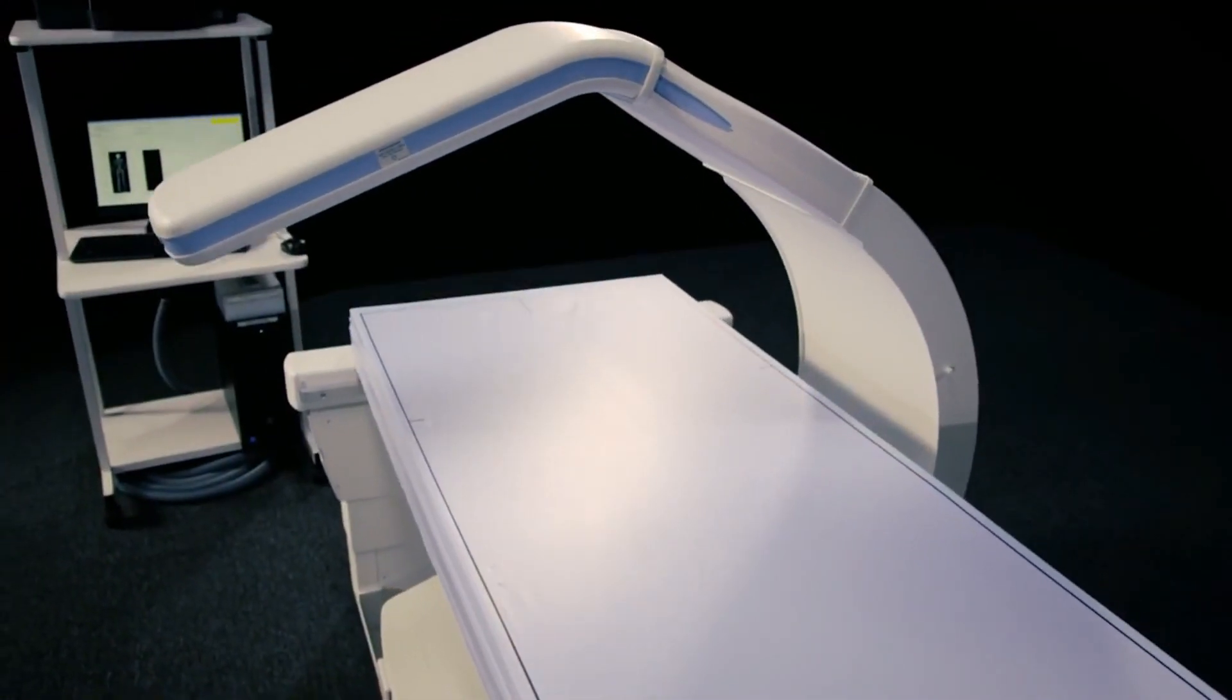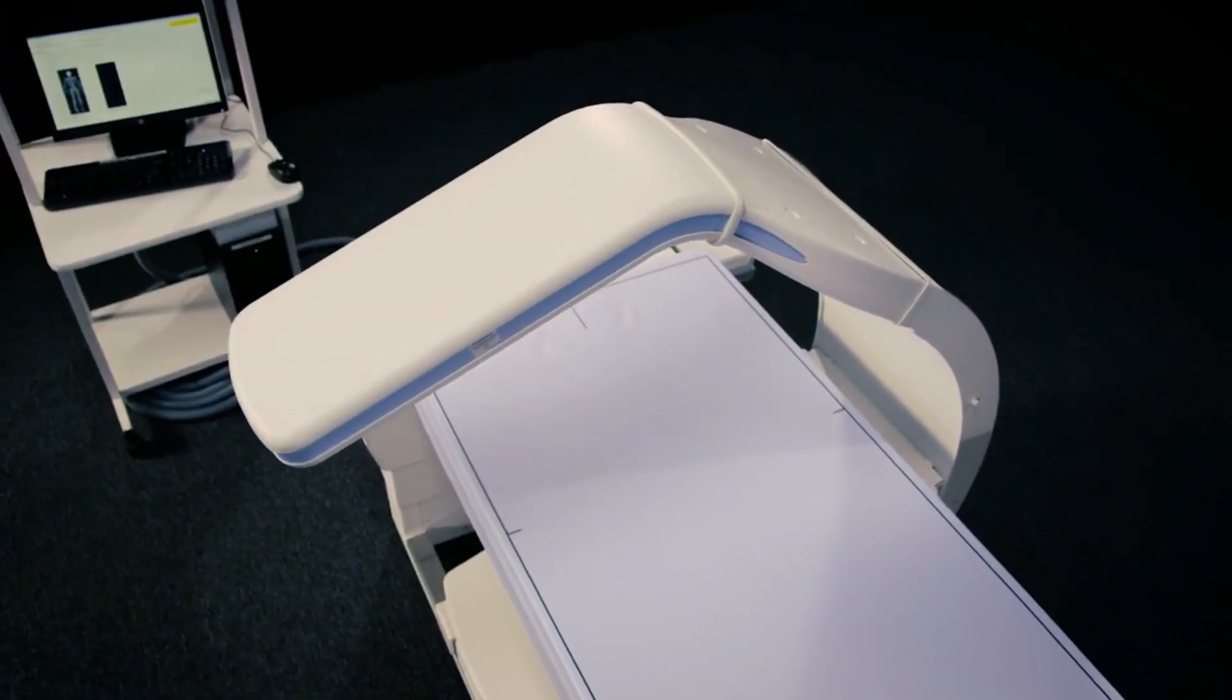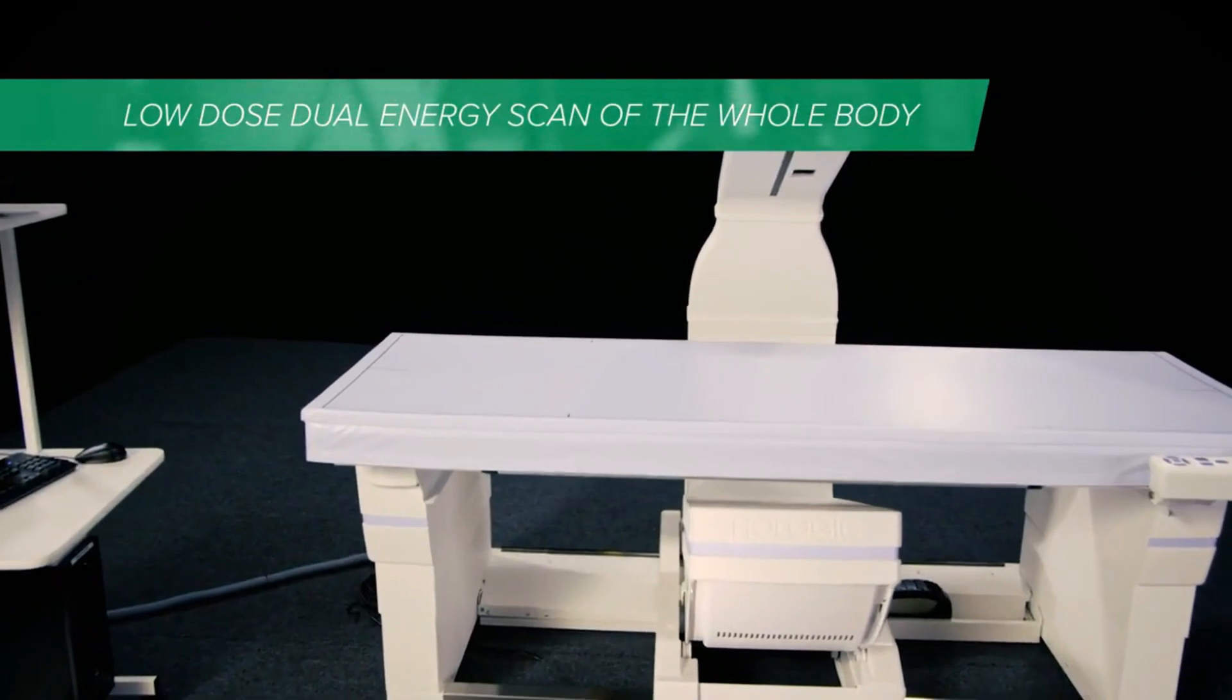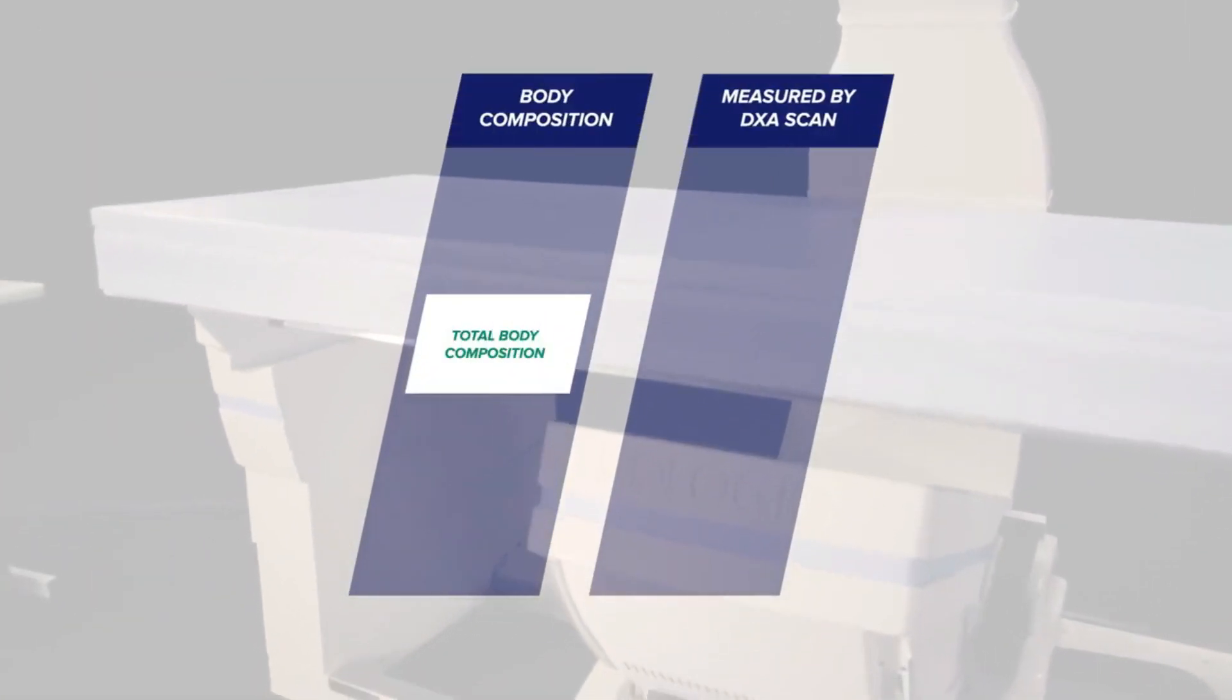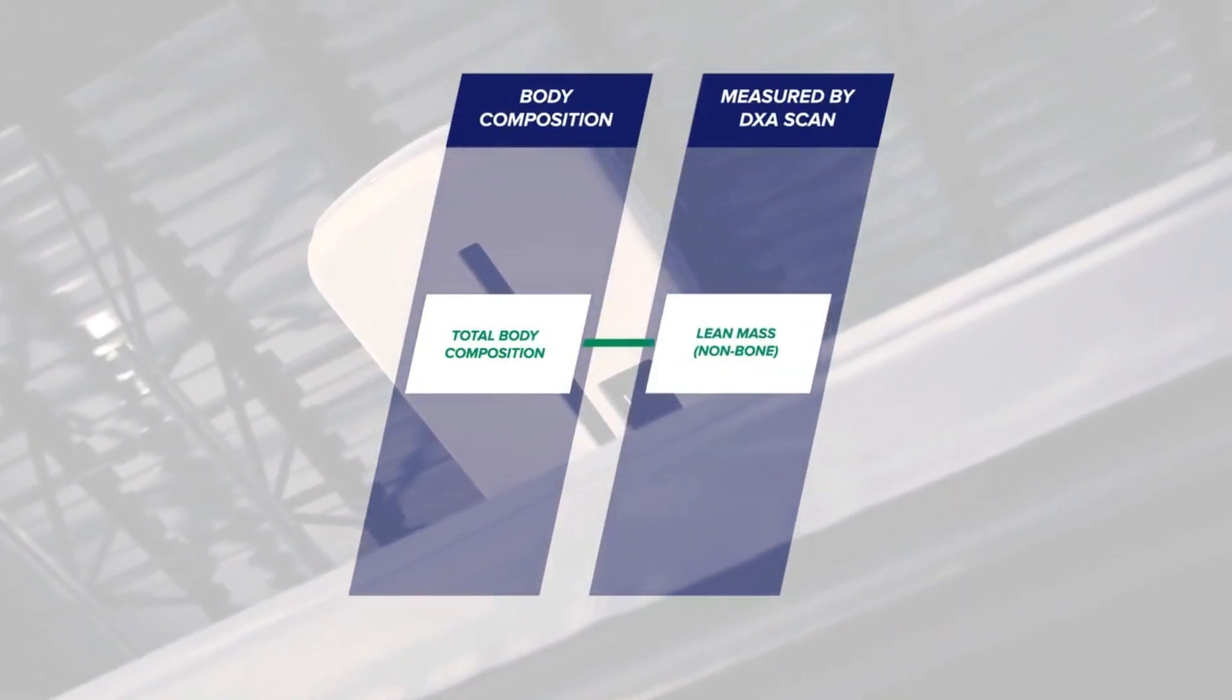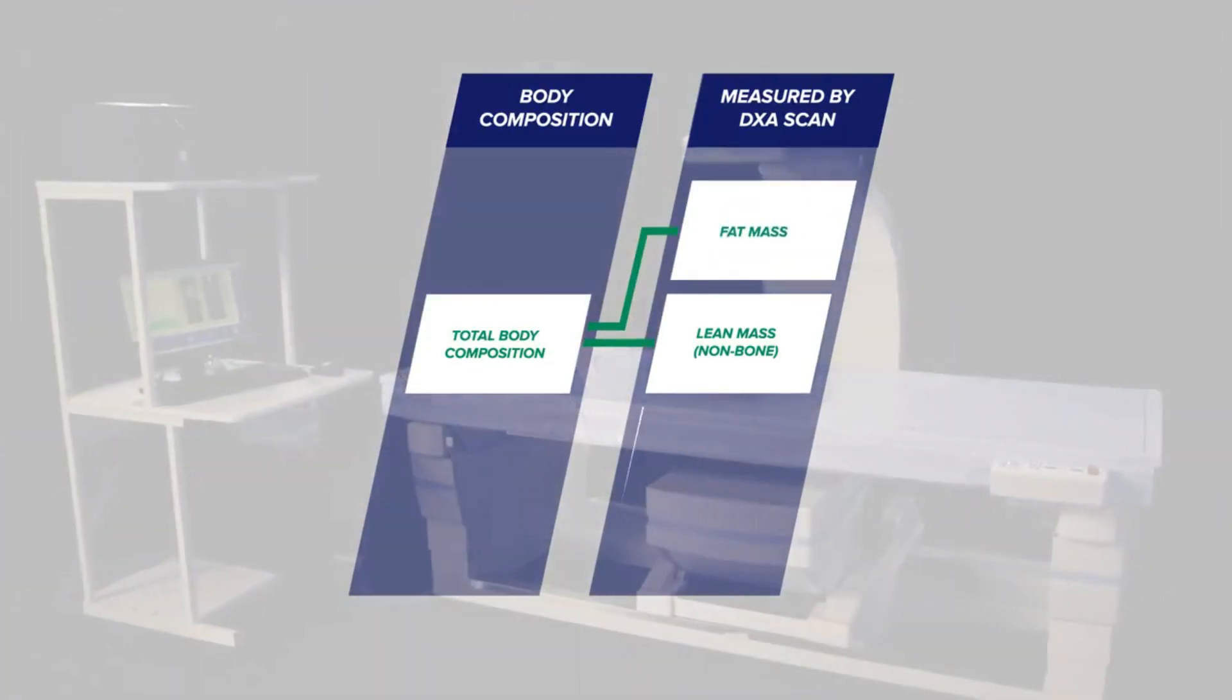This simultaneously generates two 2D images. One captures the lower-energy spectrum absorbency of the product. The other captures the higher-energy spectrum absorbency of the product. Image processing algorithms calculate the relative ratio of energy absorbed by the product at the corresponding pixels in each image, which determines an average atomic composition at that location in the product.